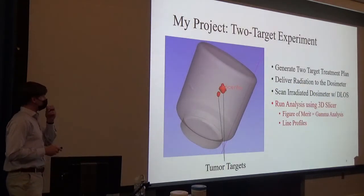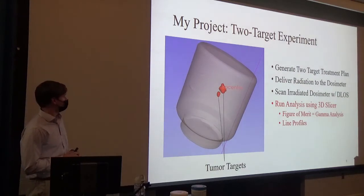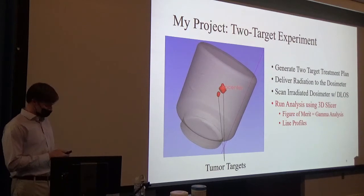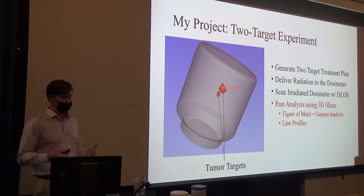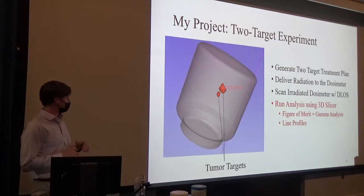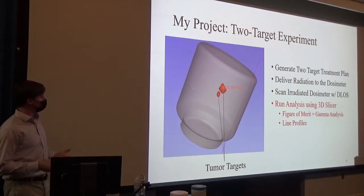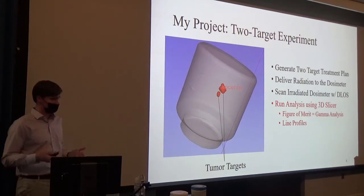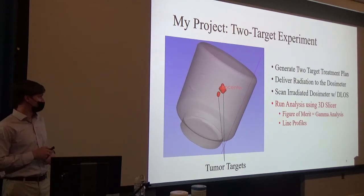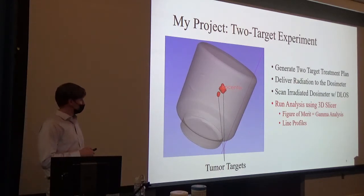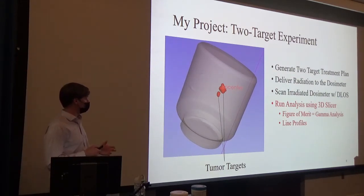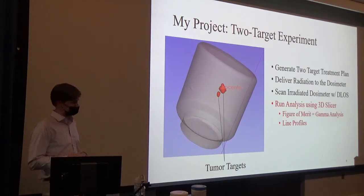That brings me to my project. I've done a few different experiments with different types of irradiations, but for this presentation we'll look at the two-target experiment. The dosimeter in this case mimics the brain, and these are two brain lesions we're targeting. The procedure: we generate a two-target treatment plan using Eclipse software, deliver that radiation to the dosimeter, scan the irradiated dosimeter with the DLOS, and then run the analysis using software called 3D Slicer. From there we use a figure of merit called 3D gamma analysis and can extract line profiles — both of which we'll discuss.